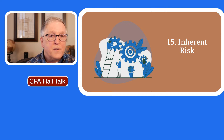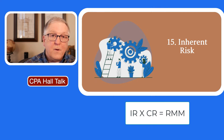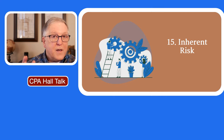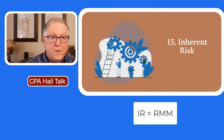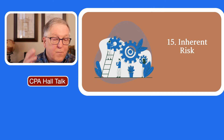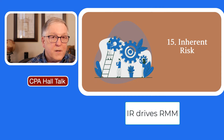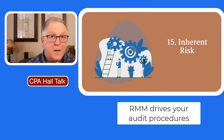Why is inherent risk so important? Think about the risk of material misstatement equation: inherent risk times control risk equals the risk of material misstatement. If we assess control risk at high — which we often do for small to medium size engagements — then the inherent risk assessment equals the risk of material misstatement. If you assess control risk at high for most of your assertions, then inherent risk is driving your risk of material misstatement, which is then driving your planned audit procedures.